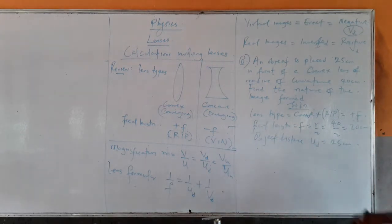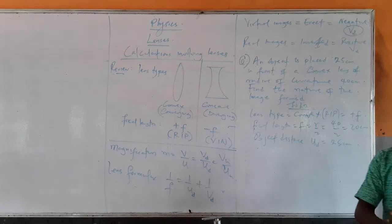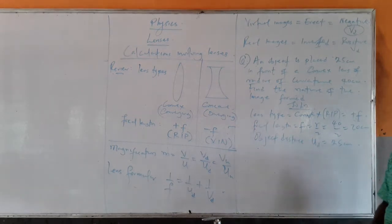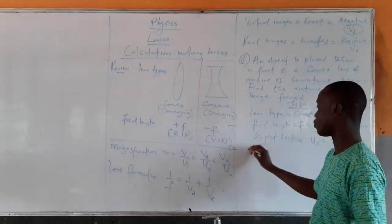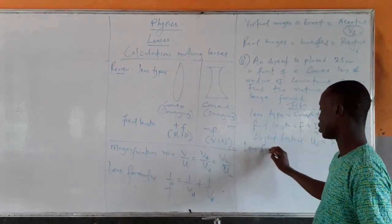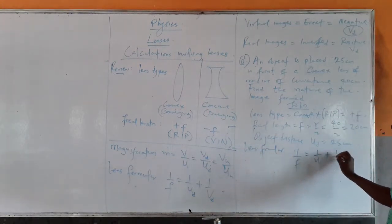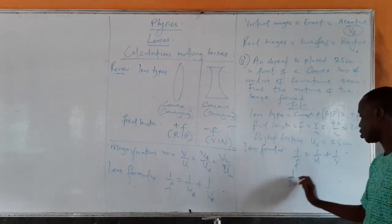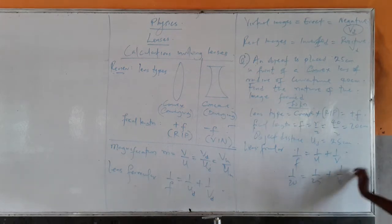To find the nature of the image — whether it is magnified, real or virtual, and its position from the lens — we use the lens formula. Using the lens formula: 1 over F equals 1 over U plus 1 over V, so 1 over 20 equals 1 over 25 plus 1 over V.